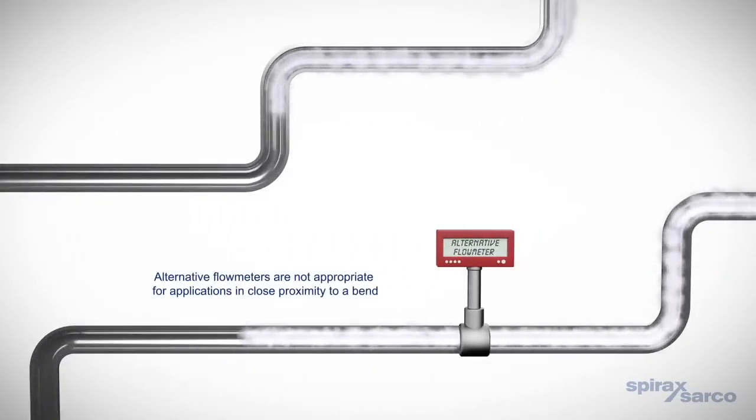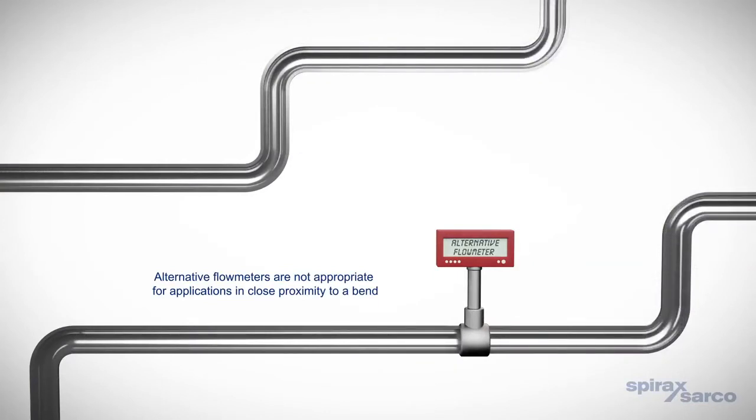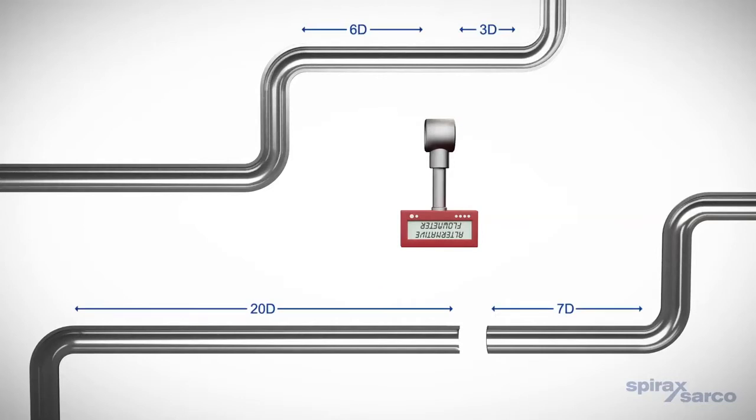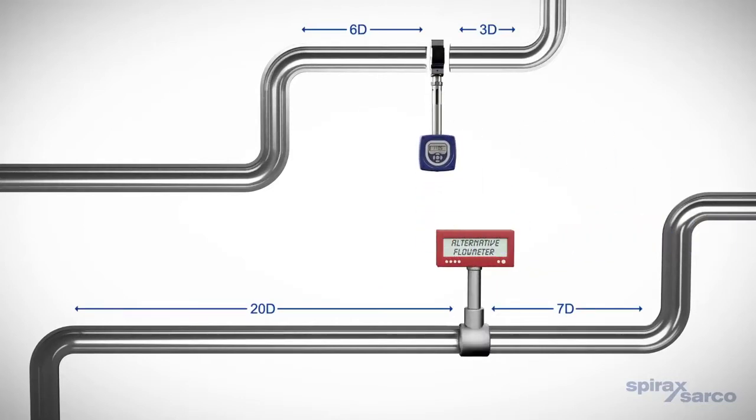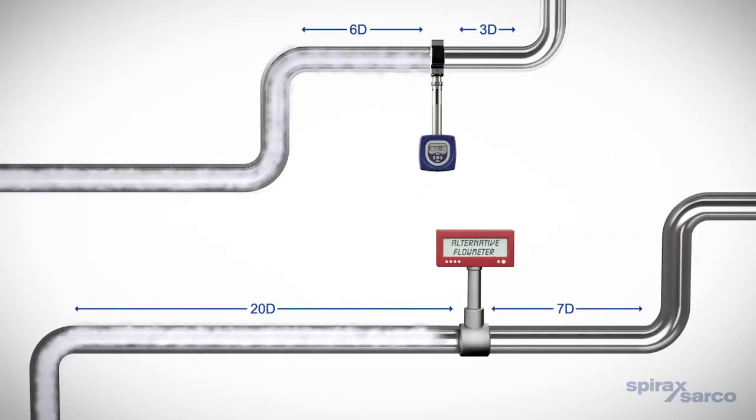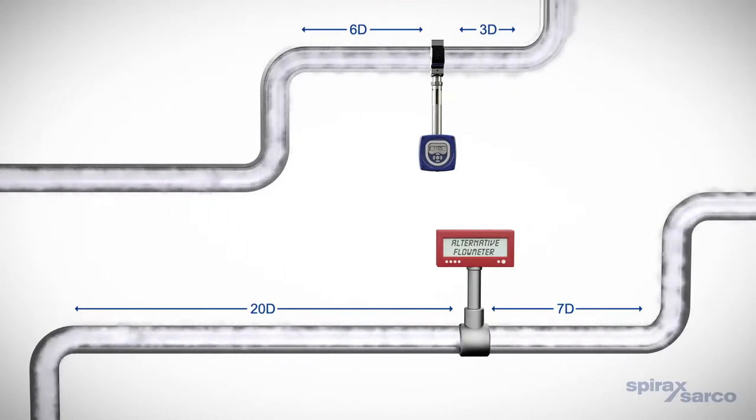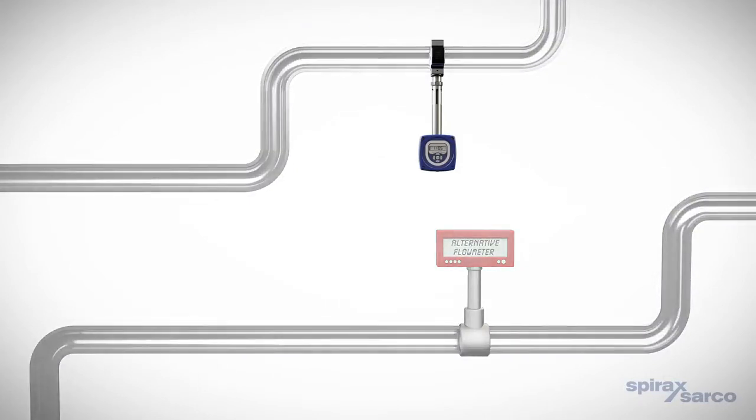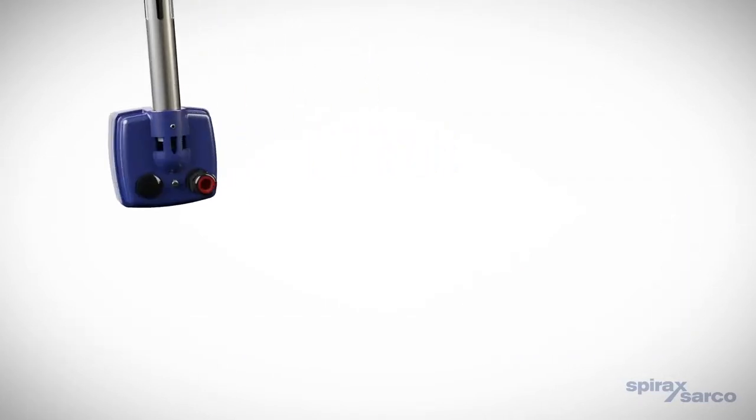Alternative flow meters are not appropriate for applications in close proximity to a bend, installed within a single point of pipe entry, giving one of the smallest installation requirements on the market. The TFA flow meter can be installed within previously unsuitable pipe work, removing the need for expensive line changes, making point of use metering possible in even the most restrictive locations.